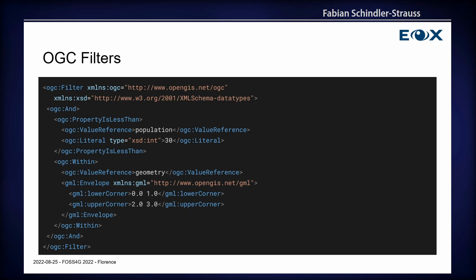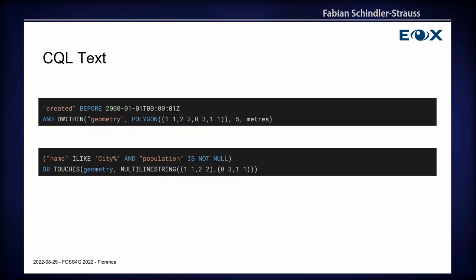But there are other query filtering languages as well. For example, the CQL text is part of the catalog specification. And as you can see here, it's basically the same functionality, but now you have it in a SQL-like filtering language. It's much less verbose and it's also quite expressive. But in the end, it actually supports the same concepts as the OGC filter.